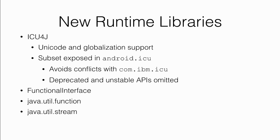We also have new runtime libraries. One of the big new ones is ICU4J — it's now part of the framework. ICU4J is a library useful for globalization and internationalization of your application. It's a fairly large library so it's now part of the framework with a different package name to avoid clashes, and you can now rely on it being there, which lets you reduce the size of your APK.